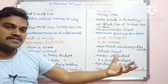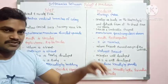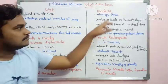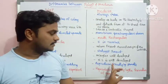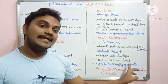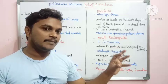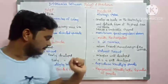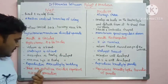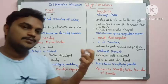Regarding reproduction: asexual reproduction by budding is present in the polyp. In medusa, there is sexual reproduction by gametes — male and female gametes are formed for sexual reproduction.